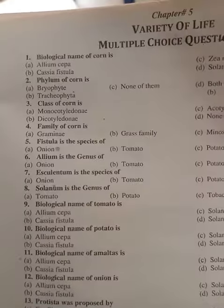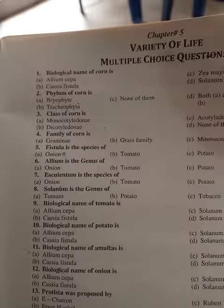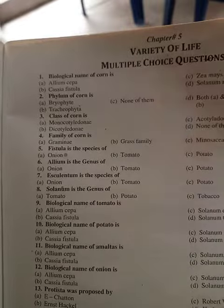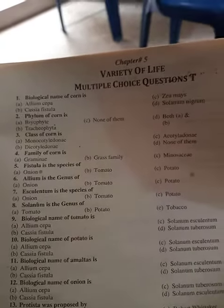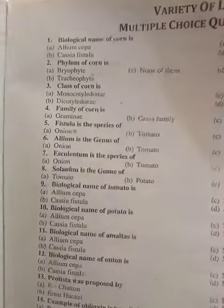Question number 3: the class of corn is Dicotyledon. Question number 4: the family of corn is the grass family.